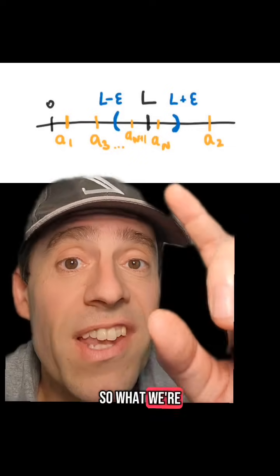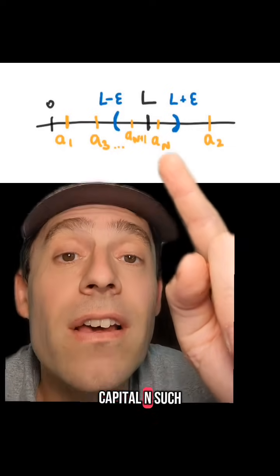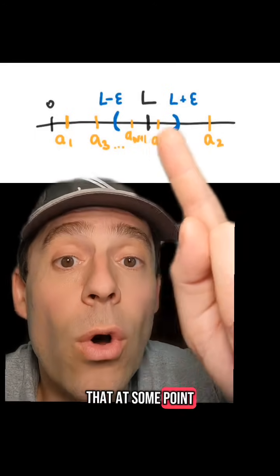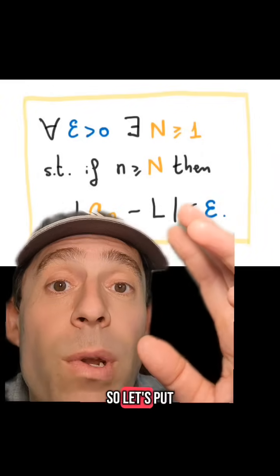So what we are saying is that for any tiny interval, there is some capital N such that at some point, all the elements of the sequence land in that interval. So let's put it all together.